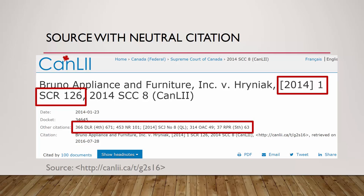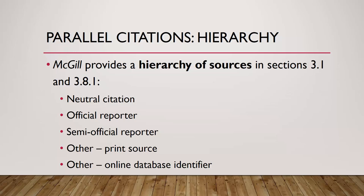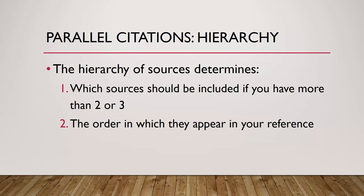Which of these citations should be included? McGill provides a hierarchy of sources. The order of importance is as follows: neutral citation, official reporter, semi-official reporter, other print sources, and online database identifiers. Note that according to Section 3.81, a neutral citation or printed reporter should precede an online database identifier if available. We use this hierarchy to decide which citations to include and in what order.